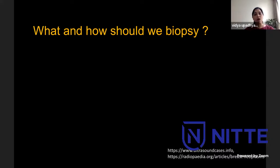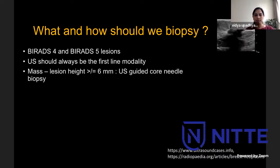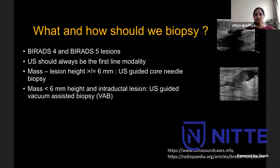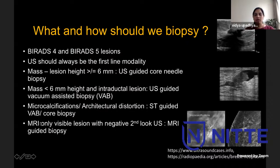What and how should we biopsy? According to ACR guidelines, all BIRADS 4 and 5 lesions should be offered biopsy. Ultrasound should always be the first-line modality because it's easier for the patient and quicker for us. If a lesion has a height of more than 6mm, it's safe to offer ultrasound core needle biopsy. If the lesion height is less than 6mm or it's an intraductal lesion, we offer ultrasound guided vacuum assisted biopsy. If there are microcalcifications or architectural distortion, we offer stereotactic guided vacuum assisted biopsy. If the lesion is only detected on MRI and second-look ultrasound is negative, MRI-guided biopsy is needed.